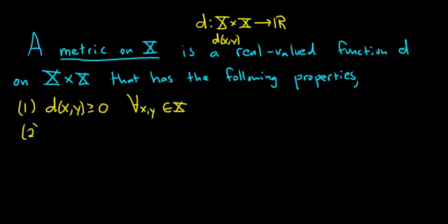Property 2: d(x,y) = 0 if and only if x = y. If the distance between two points equals zero, that should imply the points are exactly the same. This has to be true for all x,y in X.